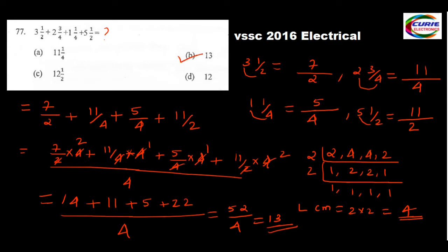We can do it in another way also. 3 and 1/2 means 3 and half, and 5 and 1/2 means 5 and half. If we add these two: 5 plus 3 is 8, and half plus half gives 1, so we get 9. Now 9 plus: we have 2 and 3/4 and 1 and 1/4. Adding 1/4 and 3/4 gives 1, and 2 plus 1 is 3. So 9 plus 4 gives 13. So 13 is the answer.